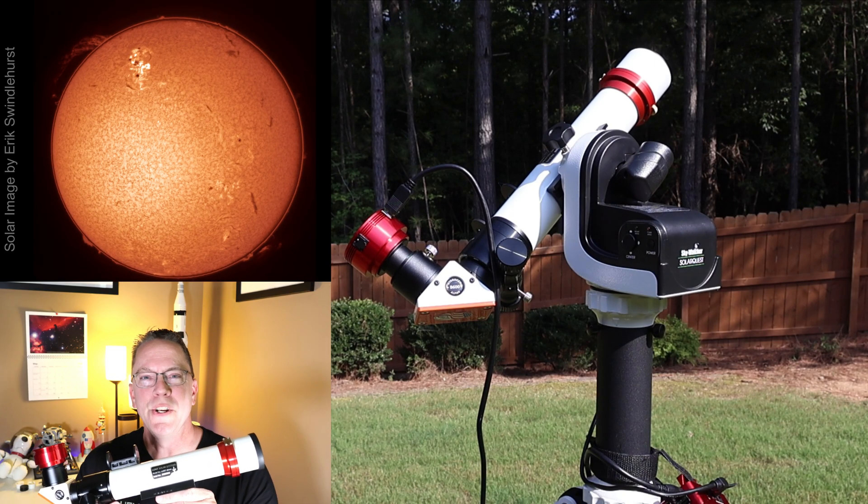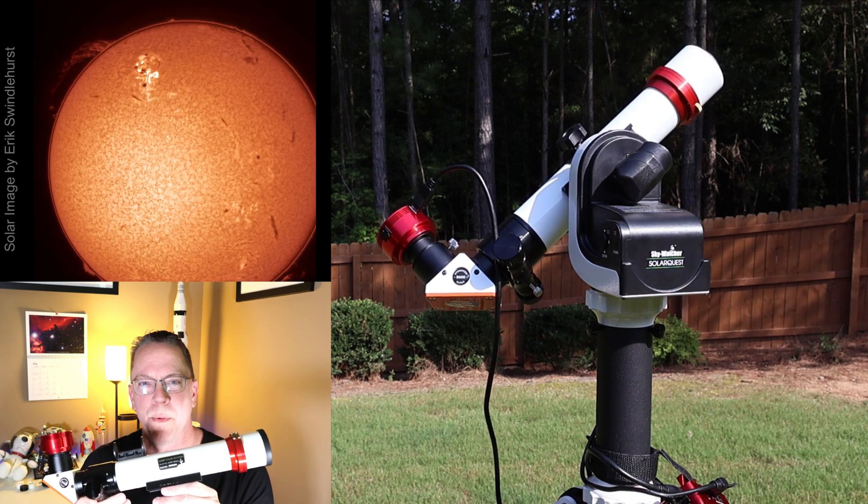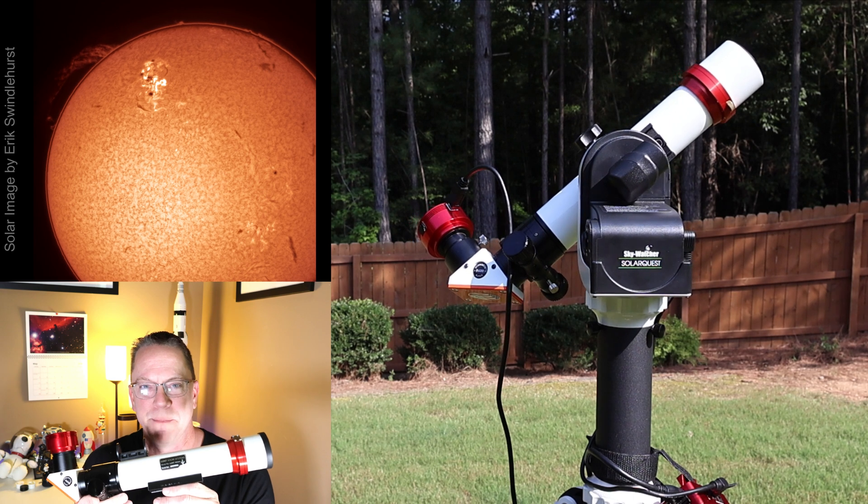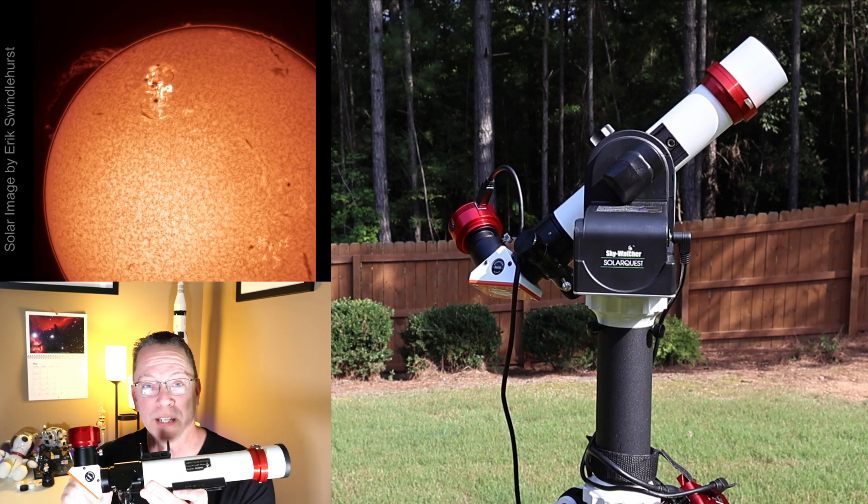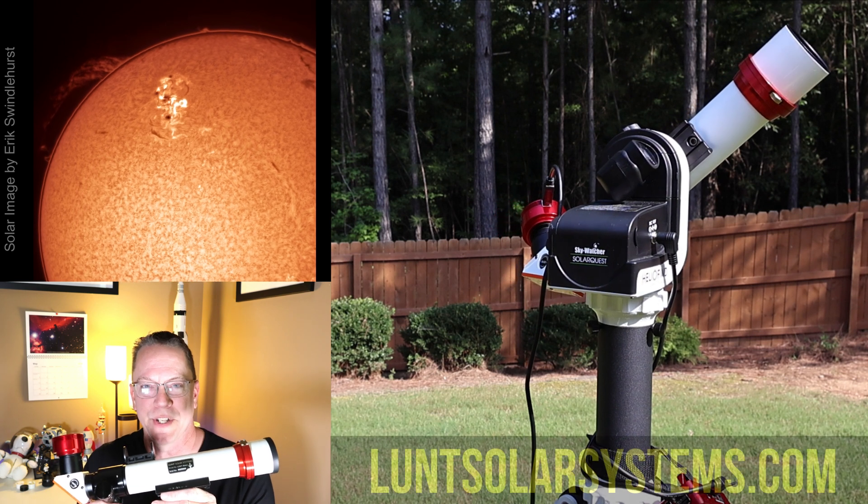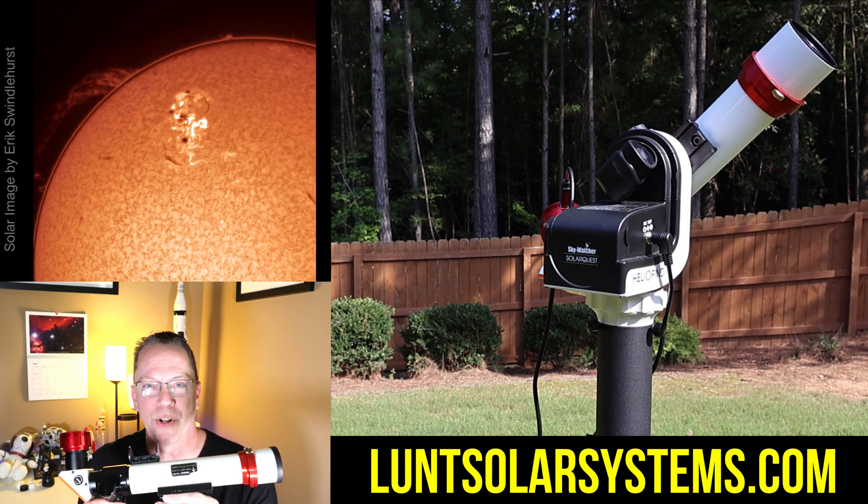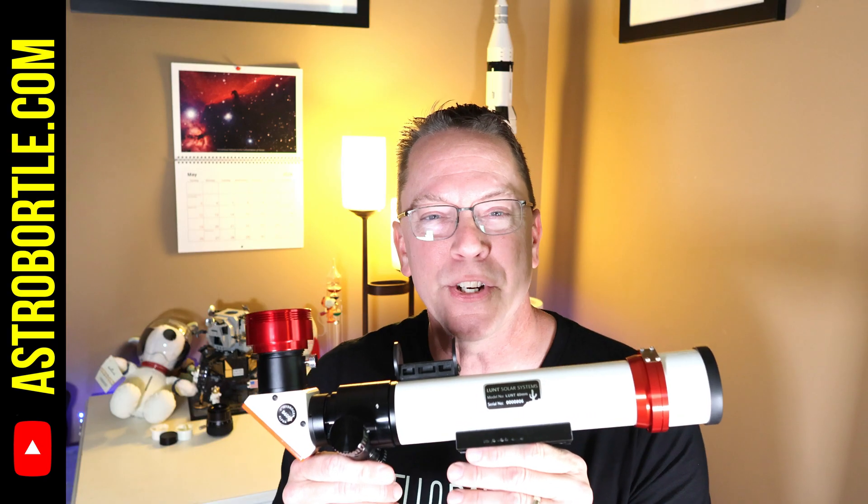And that's it. Your Lunt 40 millimeter dedicated hydrogen alpha solar telescope is ready to view all the action that's on the sun. If you're still having problems with the installation of your focuser, be sure to reach out to Lunt Solar Systems. I have many other videos on this telescope and solar imaging on my website. Be sure to check that out.